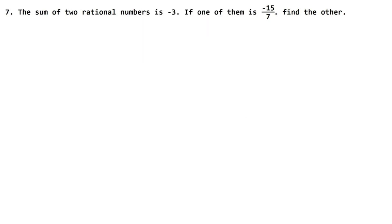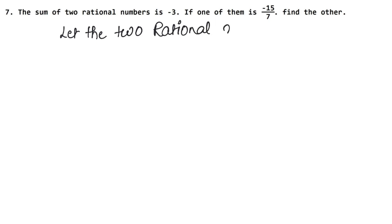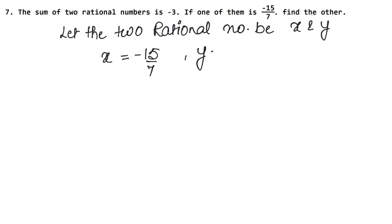You can see the two rational numbers. Let the two rational numbers be x and y. Now, if one of them is minus fifteen upon seven, let's say x is minus fifteen upon seven, and we have to find y's value.